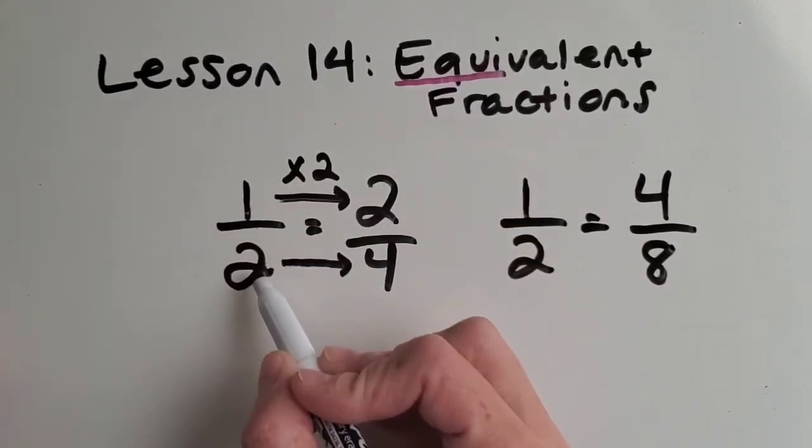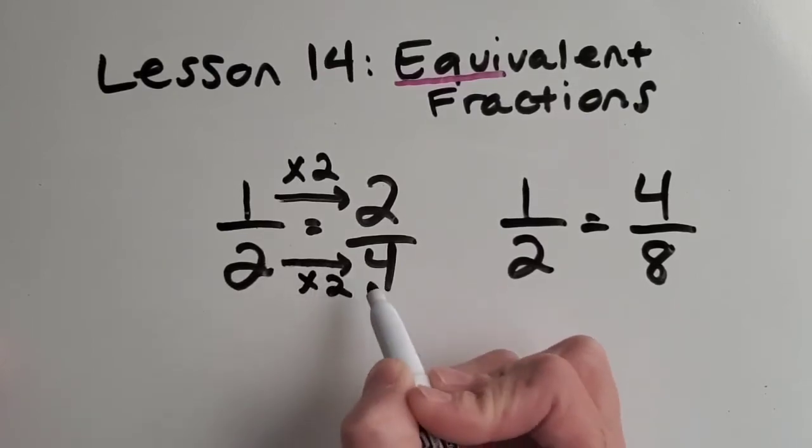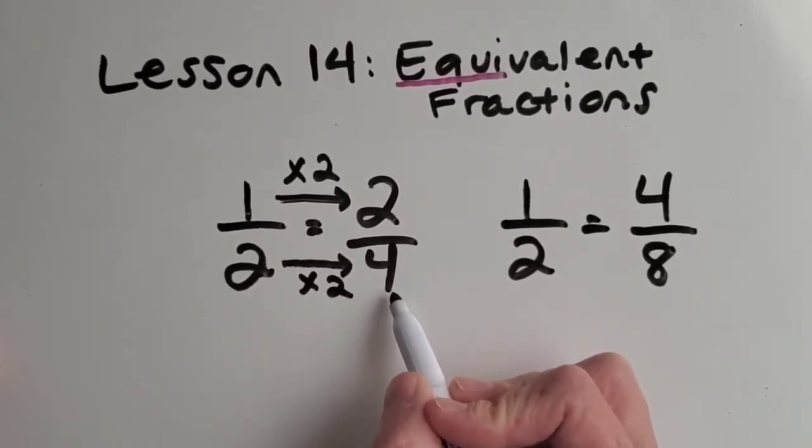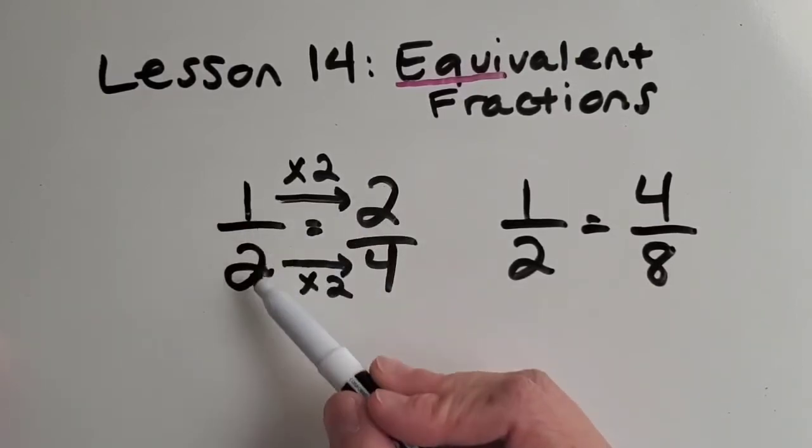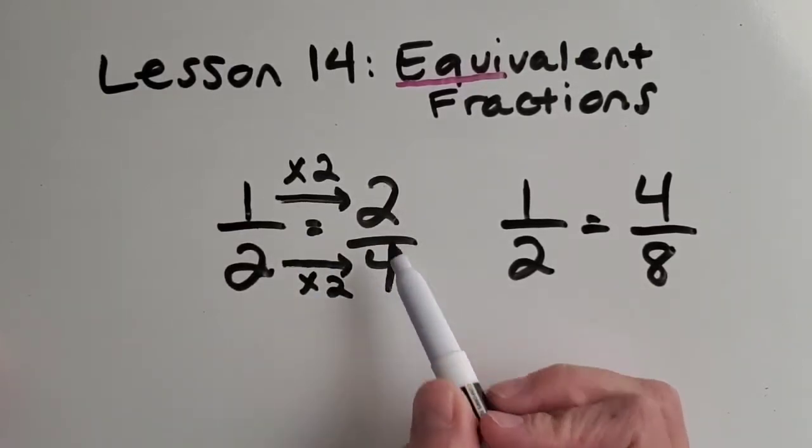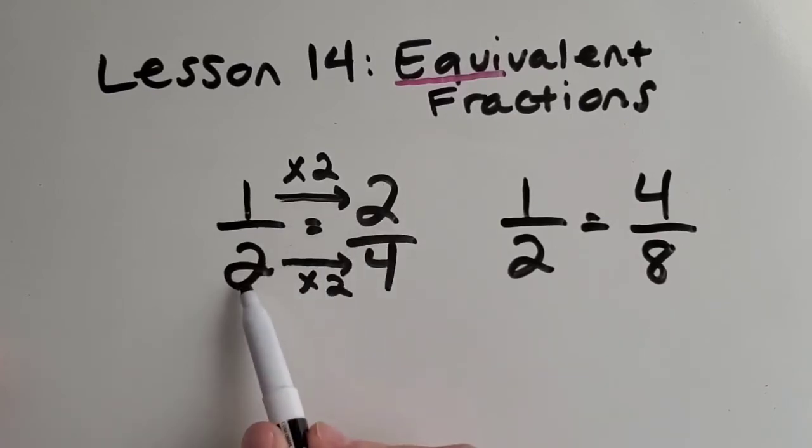So the only thing that would work is times two. And then what is two times two? Oh, yay, it's four. So that works. That pattern works. And all equivalent fractions have patterns in the numerator and the denominator.